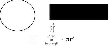So now, base times height becomes πr times r. Combine the r's together and we have πr squared, which is equal to the area of the rectangle.